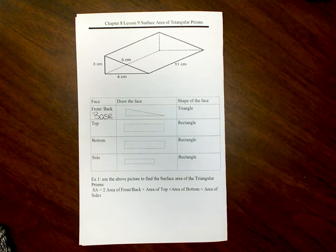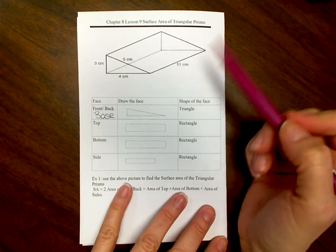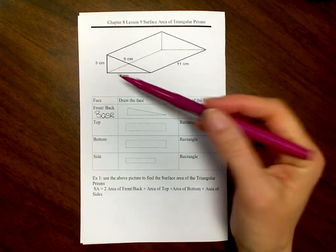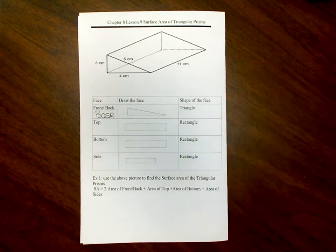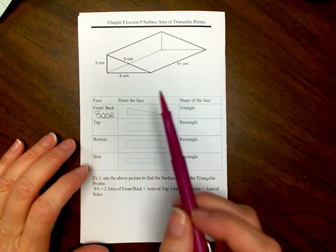This is surface area of a triangular prism — these are some notes we're going to go over real quick. We want to find the surface area of everything. If this was a ramp and I want to paint it, I need to find the surface area to see how much paint to buy, because usually it'll tell you how much a gallon covers. So you need to know the surface area and how much paint you'll need to buy.